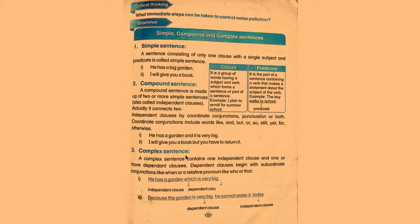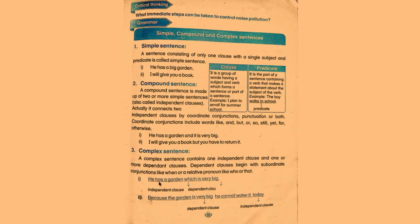Complex sentence: a complex sentence contains one independent clause and one or more dependent clauses. Dependent clauses begin with subordinate conjunctions like 'when,' or a relative pronoun like 'who' or 'that.' Example: 'He has a garden which is very big.' Here, 'He has a garden' is the independent clause — it can stand on its own. 'Which is very big' is the dependent clause; alone it doesn't make sense. Another example: 'Because the garden is very big, he cannot water it today.'